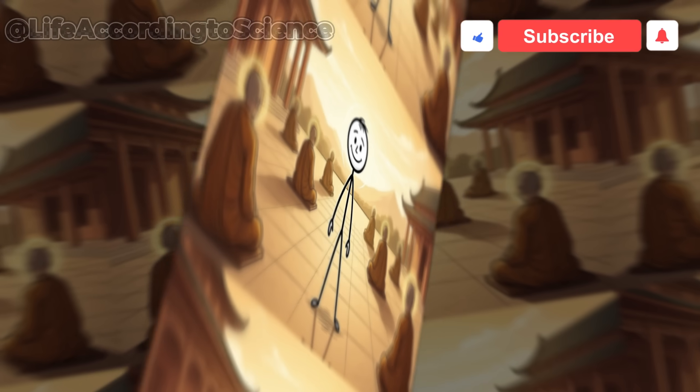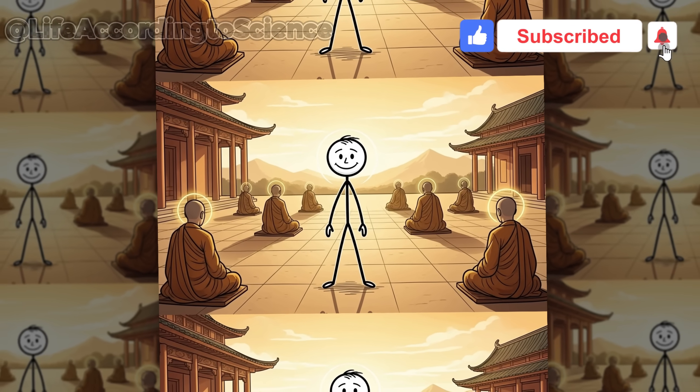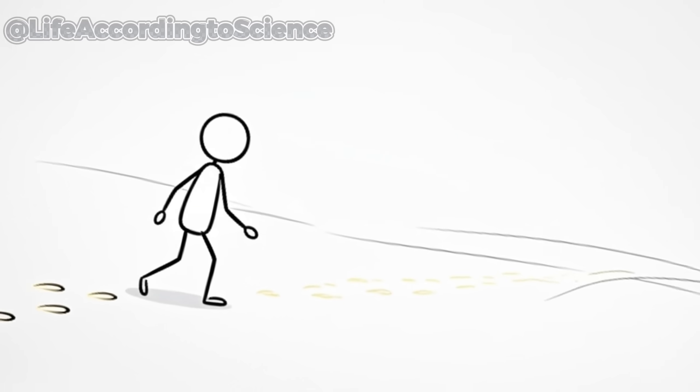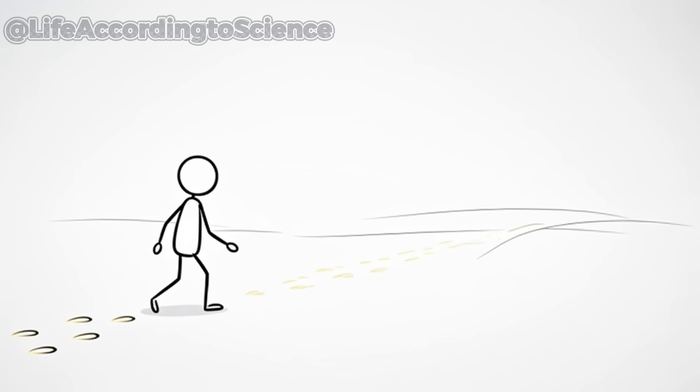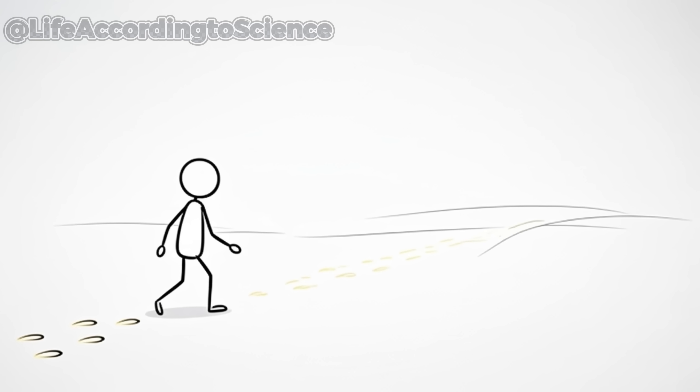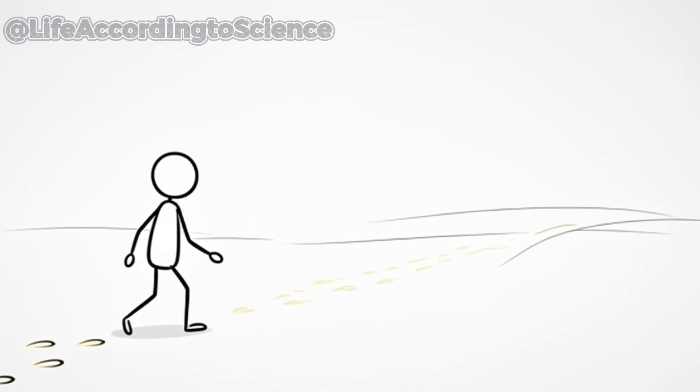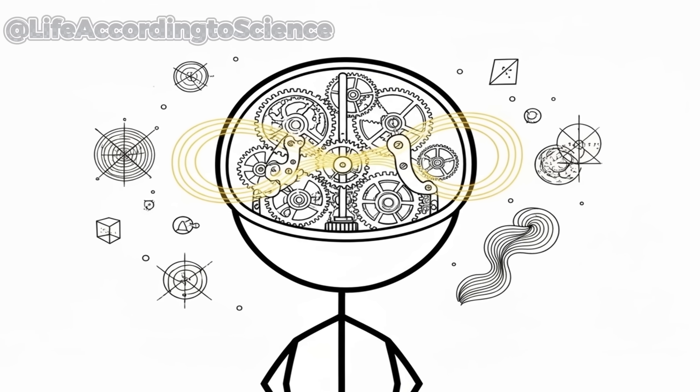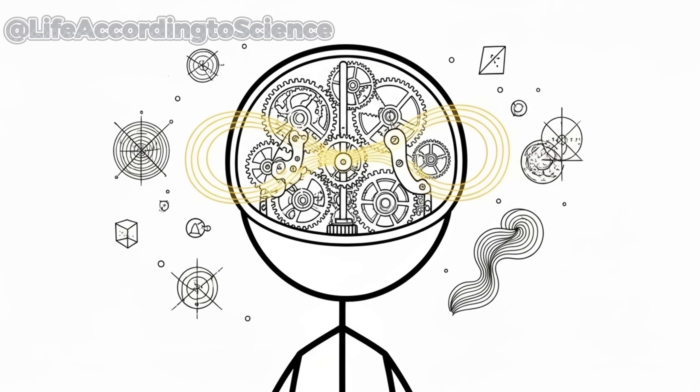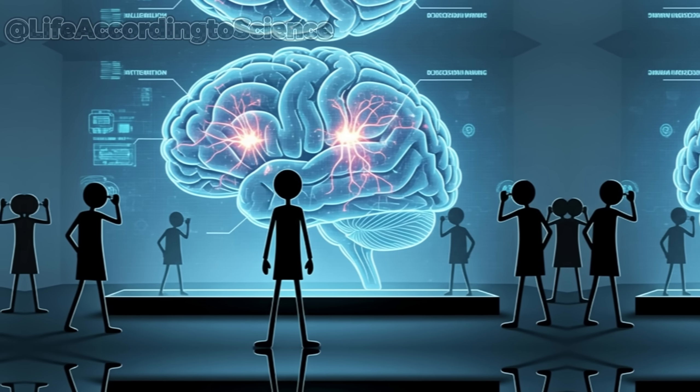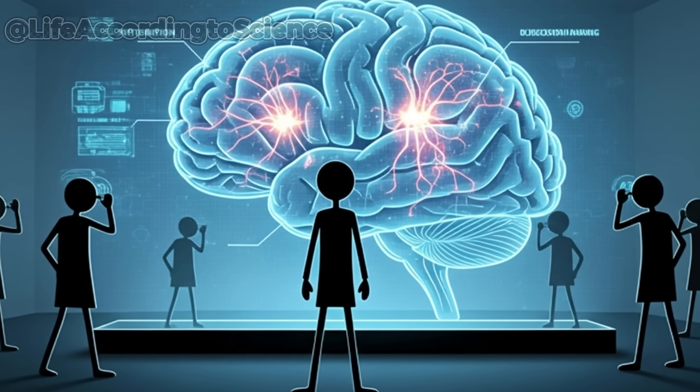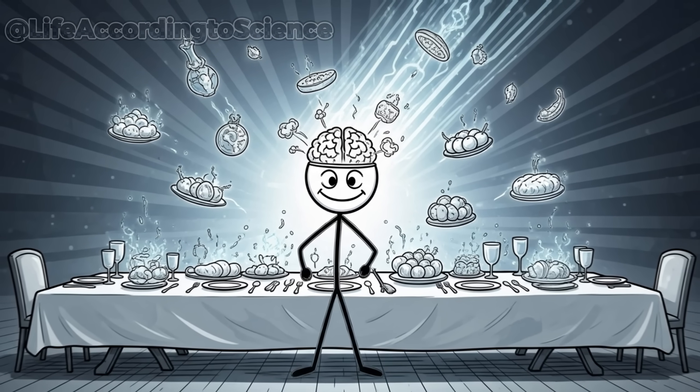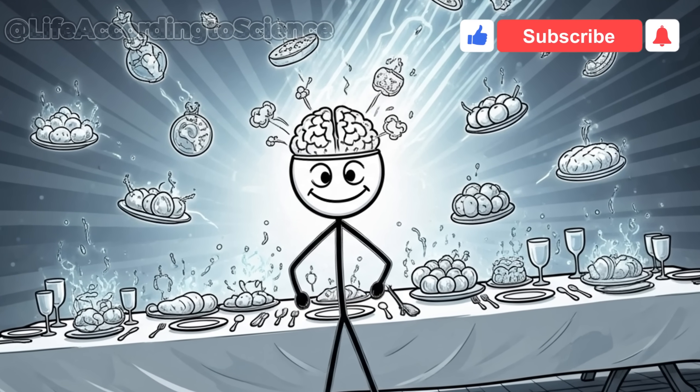Ancient traditions noticed this long before neuroscience explained it. Monks, philosophers, and sages practiced fasting not to suffer, but to think. They understood that hunger could strip away noise, leaving only presence. Today, science calls it cognitive enhancement, but the effect is the same. Your brain becomes a precision instrument tuned to reality. It's worth noting that this clarity isn't mystical. It's measurable. Brain imaging studies show increased connectivity between regions responsible for attention and decision-making after short fasts. In simple terms, when you stop feeding the body, the mind begins to feast.